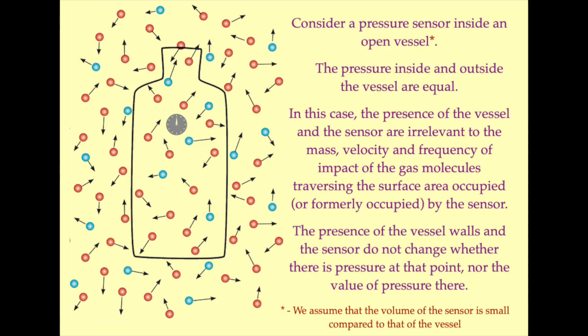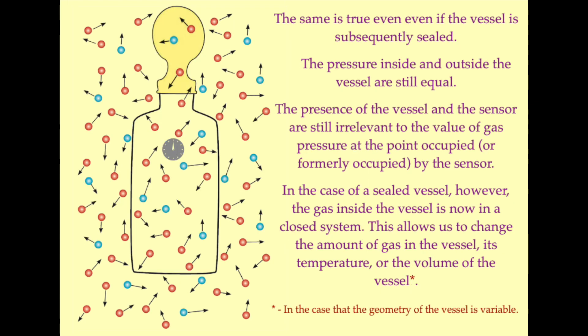We may further illustrate this point by considering a gas pressure sensor inside an open vessel. The pressure inside and outside the vessel are effectively the same, and the presence of the vessel walls has no impact on the pressure measured by the sensor. This remains the case even if the vessel is subsequently sealed. The pressure measured by the sensor is not dependent on the presence of the walls or the seal at the top of the vessel.